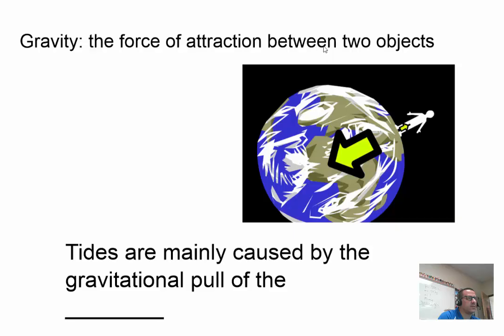Now gravity is the force of attraction between two objects. You can see in this picture we have a man standing on Earth. The Earth is pulling down on that man. The Earth has a large mass, so it has a large gravity and is pulling him down.